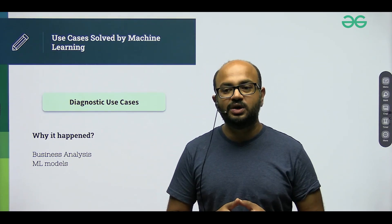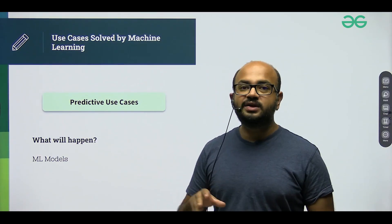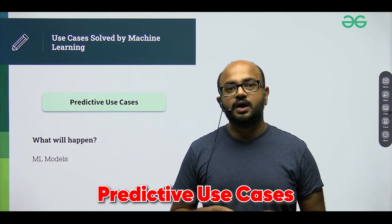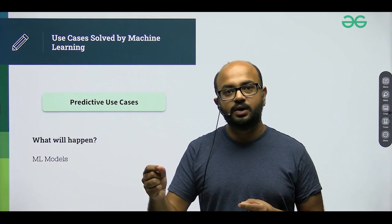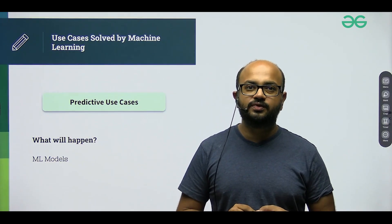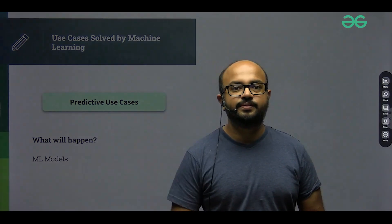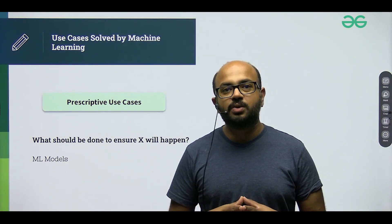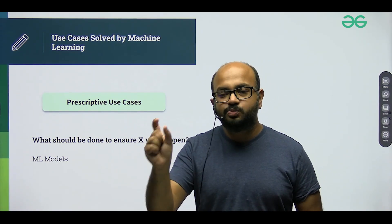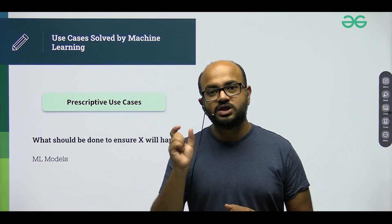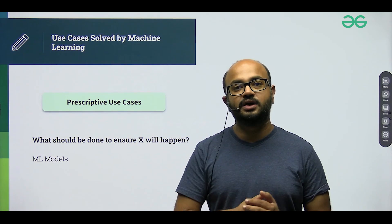How did it impact the business when bad people were accepted and good people were not accepted? Then finally, you will build your predictive model. This model will talk about which people to give the credit card to and which people not to give the credit card to — that is called predictive analytics. You will also be talking about what changes to the business need to be done to ensure the right people are or are not getting a credit card — that is prescriptive analytics.